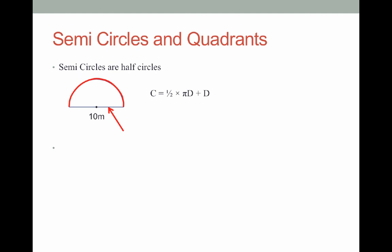So I'll need to add on another diameter. This formula right here will give me the circumference, or the perimeter, of my semicircle. So, the diameter is 10, so it's a half times pi times 10, and then I'm going to add on another 10.